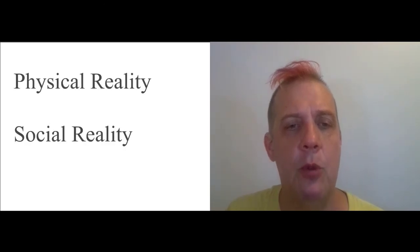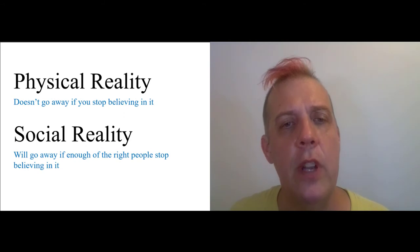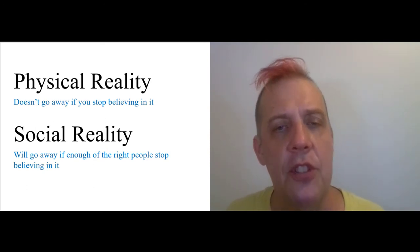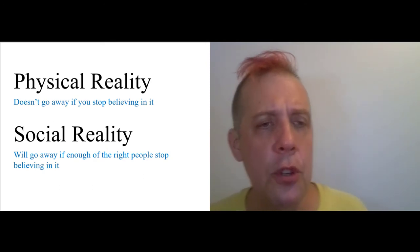One way of thinking about what's going on here is that we are dealing with something that in philosophy we call social construction. And that might sound like a weird, scary phrase, especially if you've heard it bantered around by people who don't really understand what it is. But it's really a very simple thing. So, to understand social construction, you just have to think about the difference between physical reality and social reality. Physical reality is things like the Rio Grande. It's a river. It's created by the water cycle, a process of evaporation and precipitation. The important thing about physical reality is that it doesn't go away if you stop believing in it. You can say, I don't believe in the Rio Grande, but it will still be there. The water will still circulate.